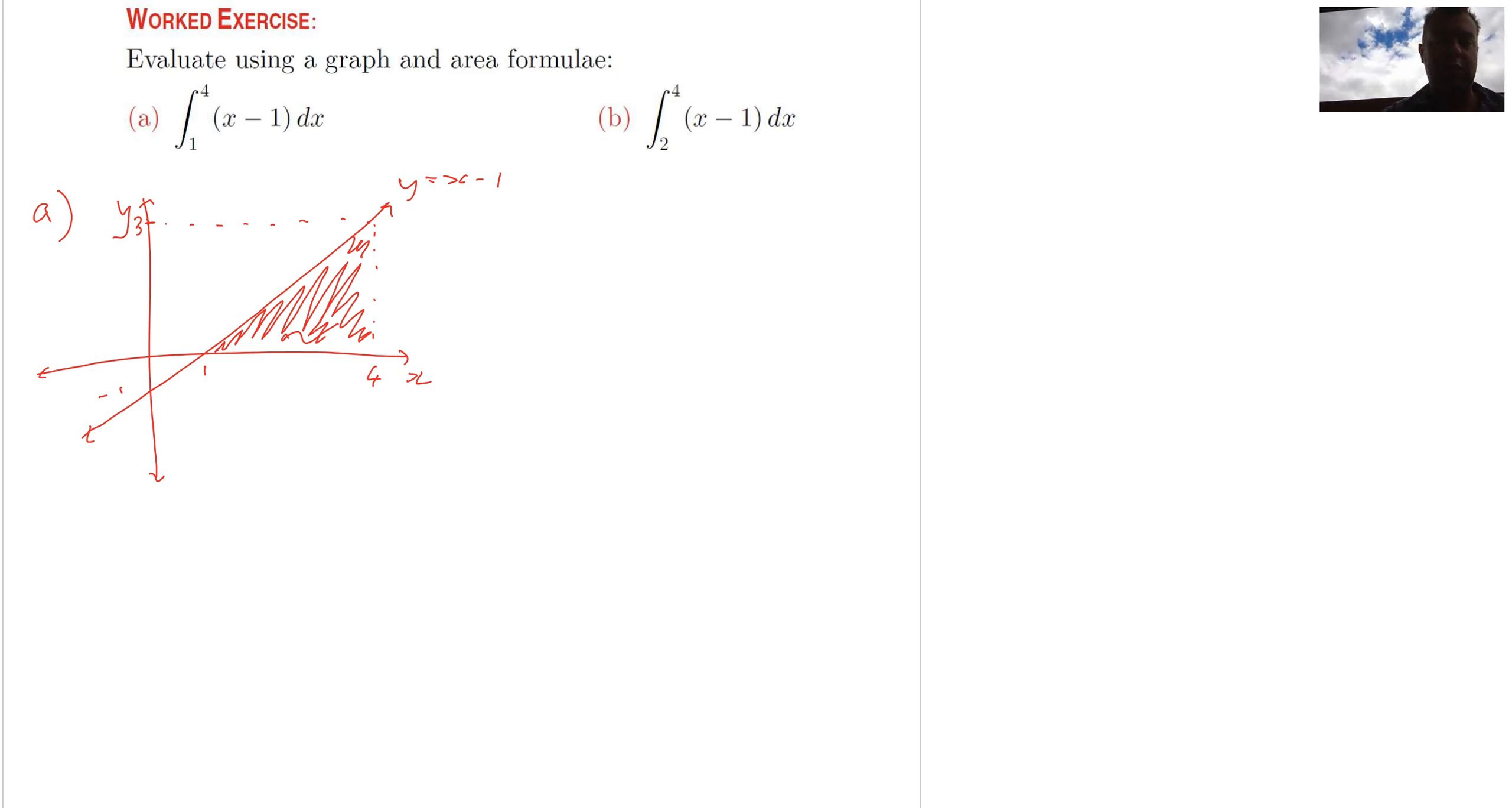Yeah, it's a triangle. I know how to work out the area of a triangle. So the area of that would be half the base times the height and I've kind of worked out some of those things already. So instead of saying the area equals, I'm going to say the integral from 1 to 4 of x minus 1 dx equals half times, so the base there is going to be 3, 4 minus 1, half times 3 times the height is 3 equals 4.5.